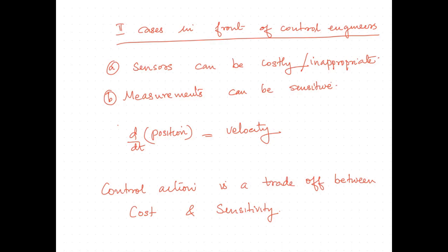There are two different cases in front of control engineers: sensors can be very costly or inappropriate, and also the measurements can be very sensitive. For example, if velocity is identified by taking the derivative of position, and the position sensor is highly noisy, then the velocity can also be noisy. Hence, the control action is basically a trade-off between cost and sensitivity, and the control engineer should carefully identify which should be given prior importance.